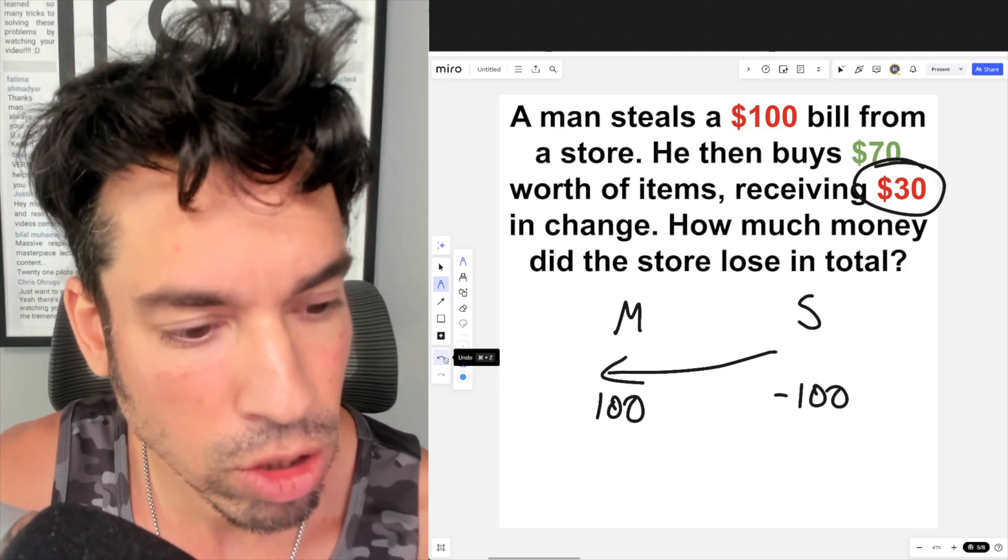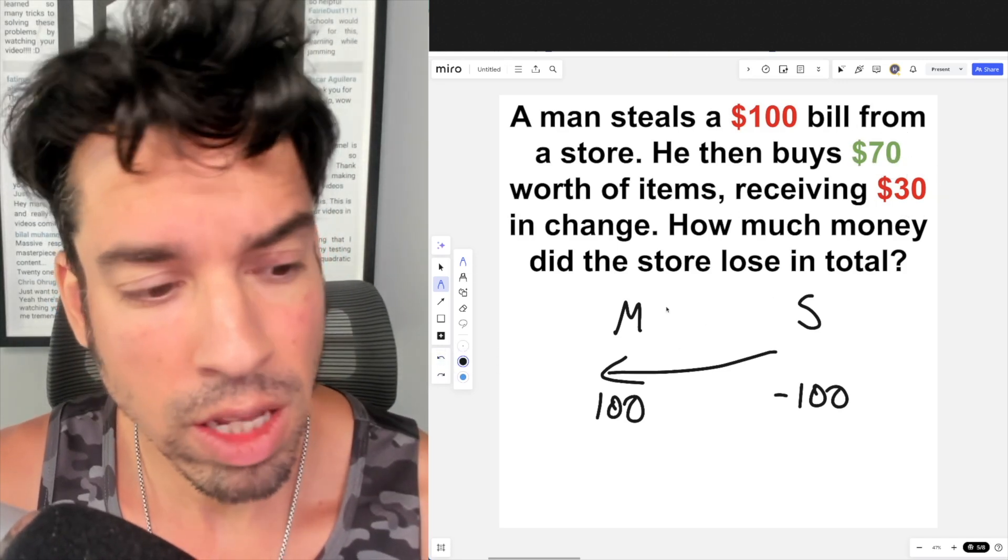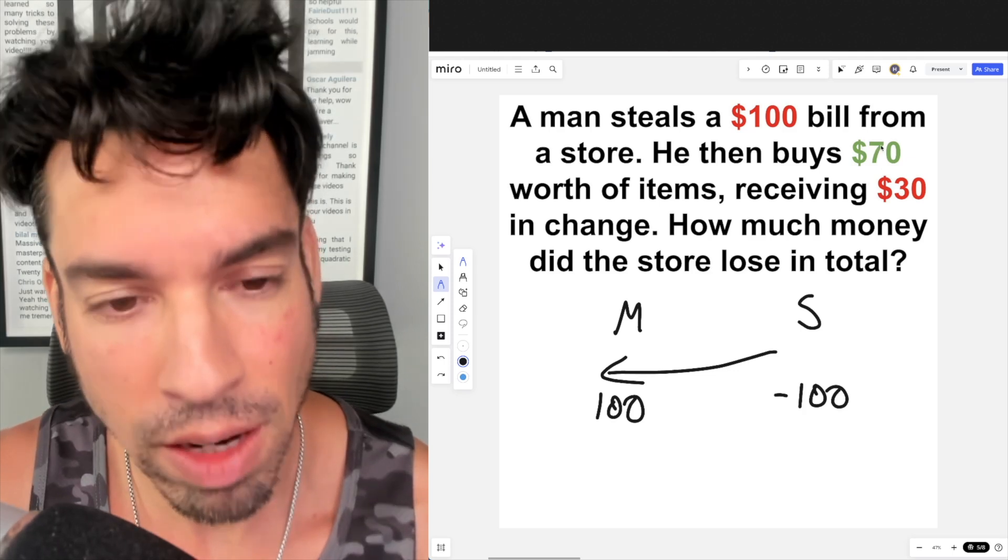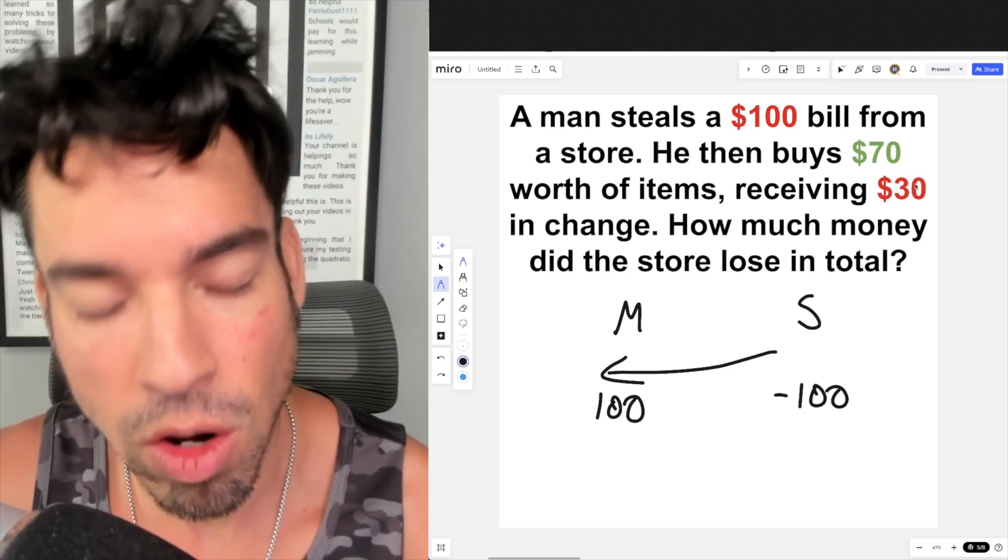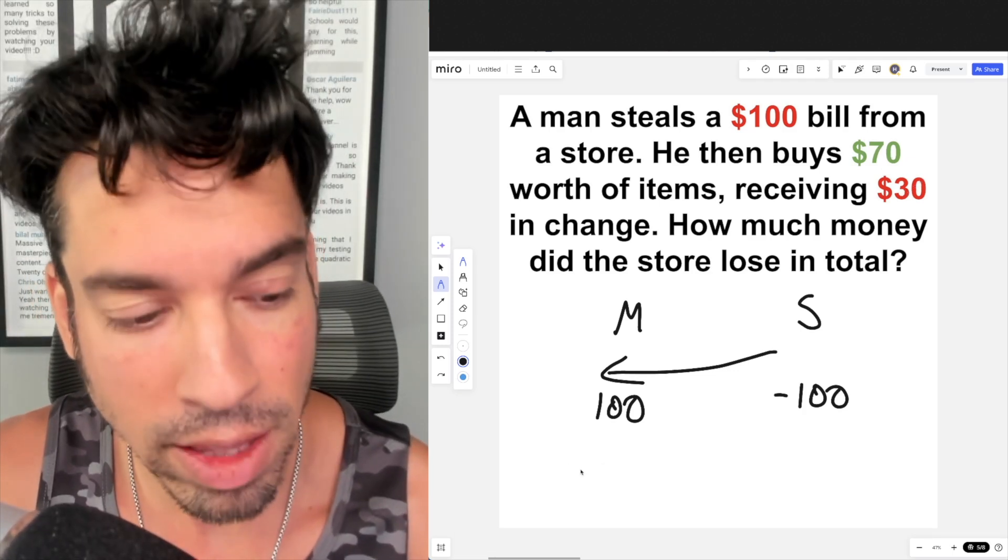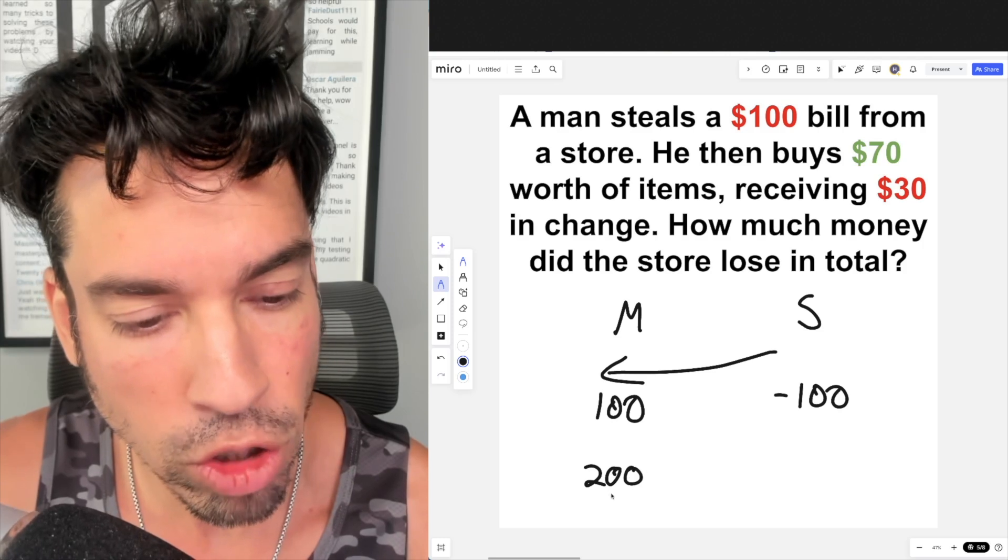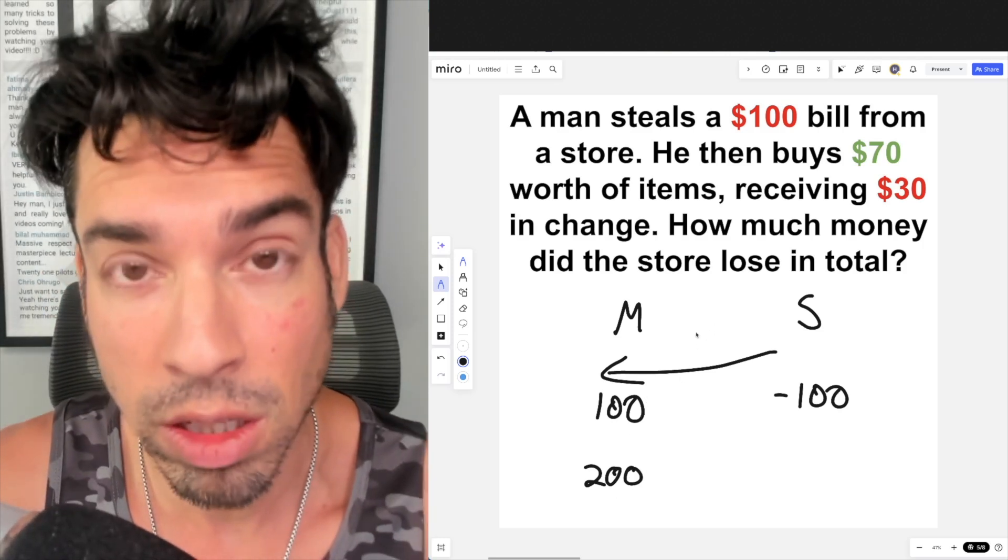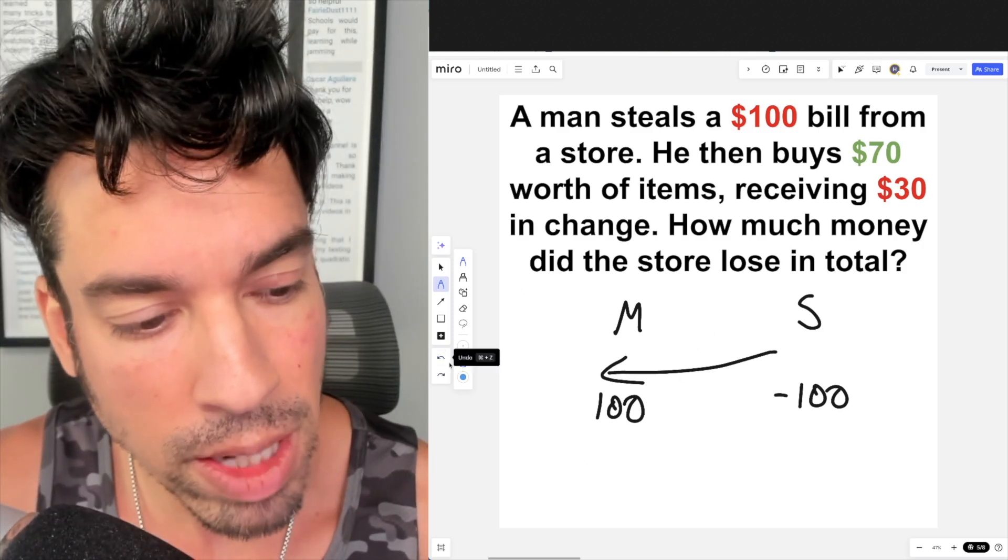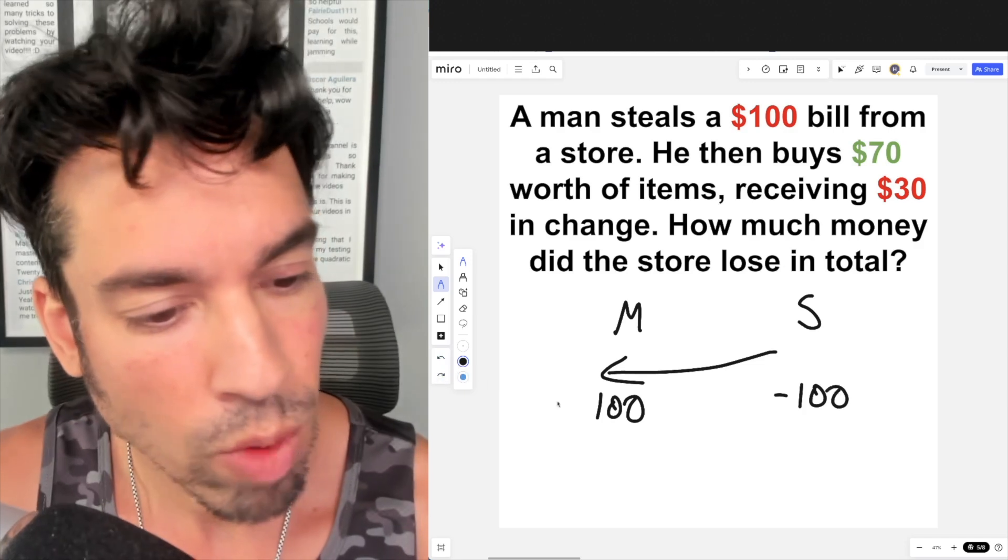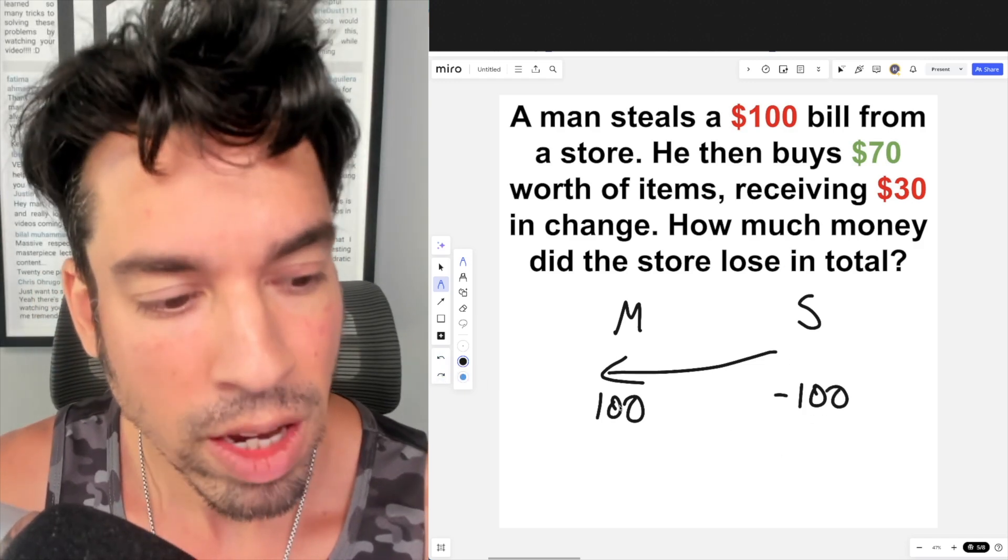And then he's getting $70 worth of goods from the store and also getting another $30. So the initial thought is: he's getting $100 plus $70 worth of goods and $30 change. You add that all up and the man's getting $200 from the store. The store is losing $200. We need to think about this more carefully.